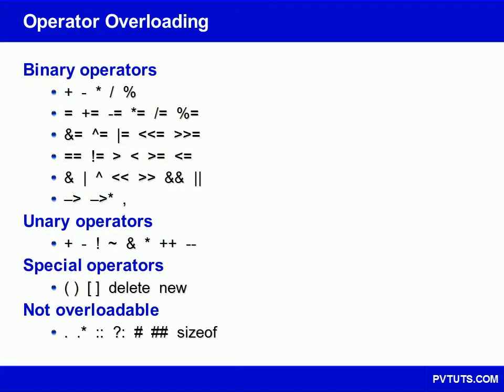C++ allows overloading of almost all operators in the language. As can be seen in this table, most operators are of the binary type. Only a couple of them are unary, and some special operators cannot be categorized as either. There are also some operators that cannot be overloaded at all.